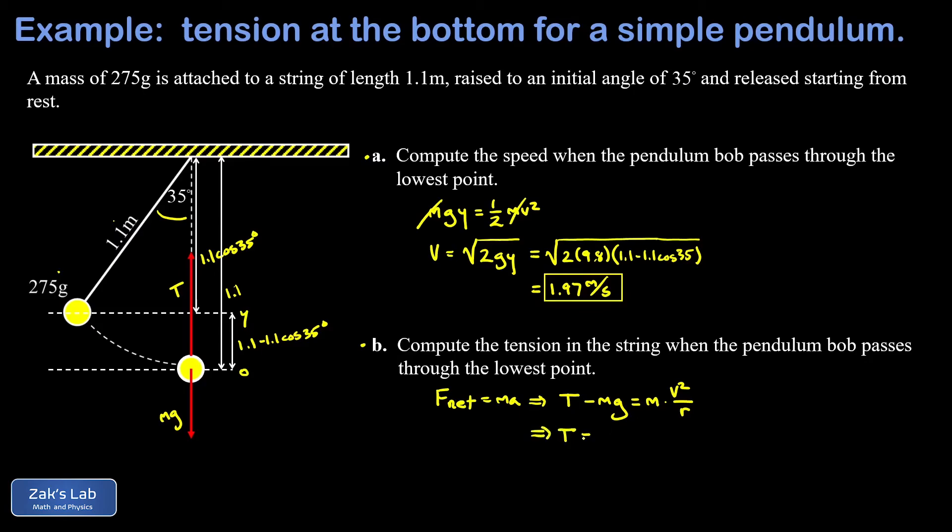So we solve for the tension. We add mg to both sides, and I'm going to factor out an m on the right-hand side as we go. So I get m times the quantity g plus v squared over r. Now we just have to plug in the numbers, and my mass is 275 grams or 0.275 kilograms. g is 9.8. v is 1.97, we found it in part A. I've got to square that and then divide by r, which is 1.1. And when I run the numbers on this, I get a tension of 3.67 newtons. And we're done.